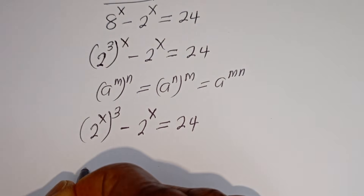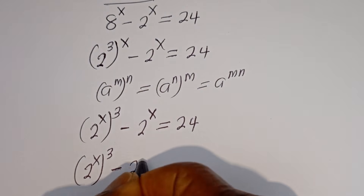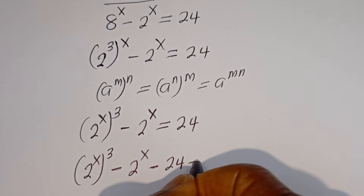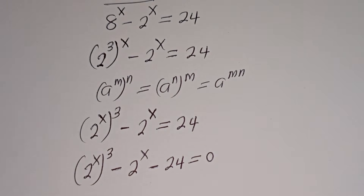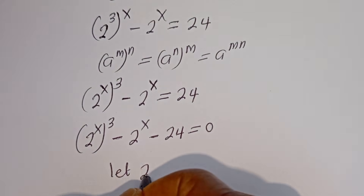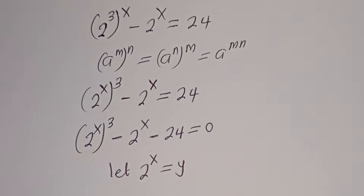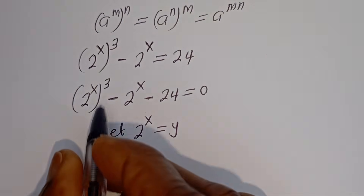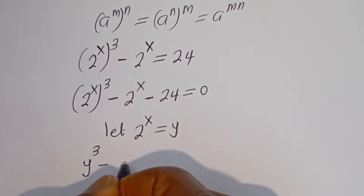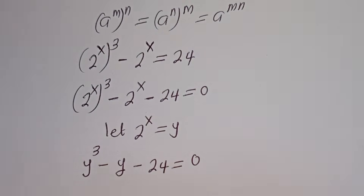Then, this is 2 to the power of x, to the power of 3, minus 2 to the power of x, minus 24, is equal to 0. Let 2 to the power of x equal y. Then, here we have y to the power of 3 minus y minus 24 is equal to 0.